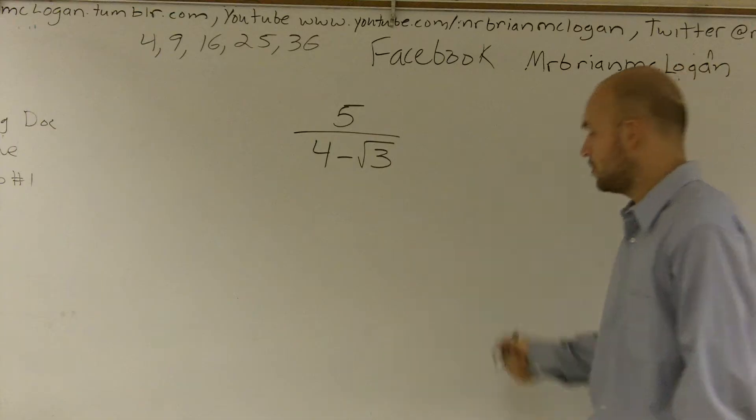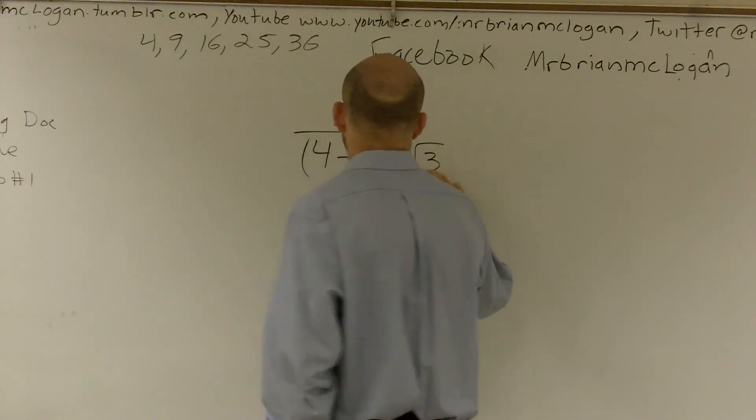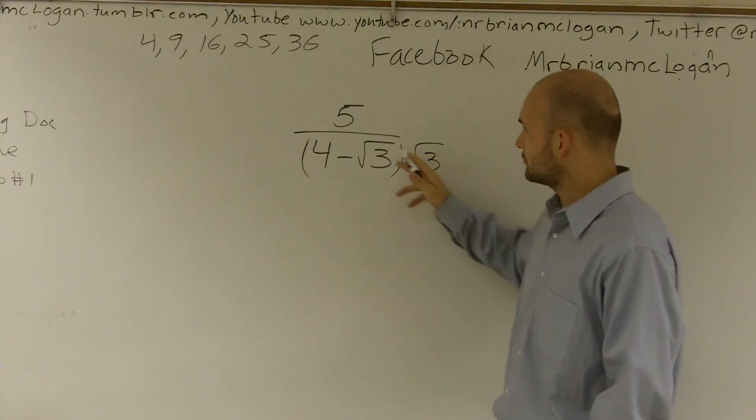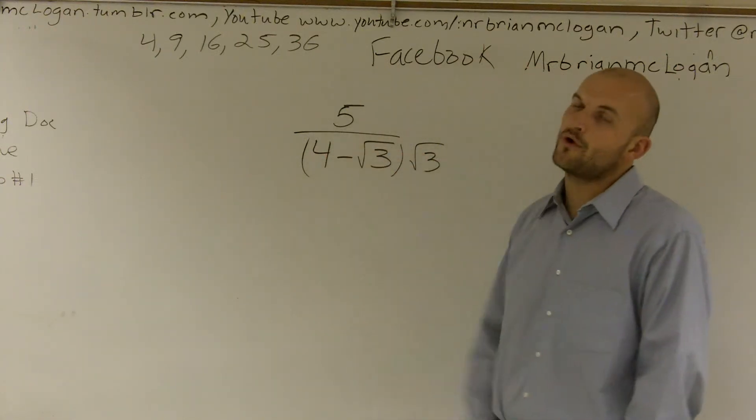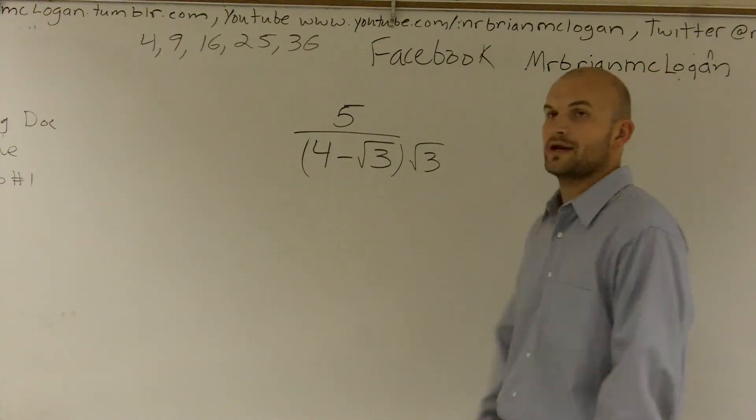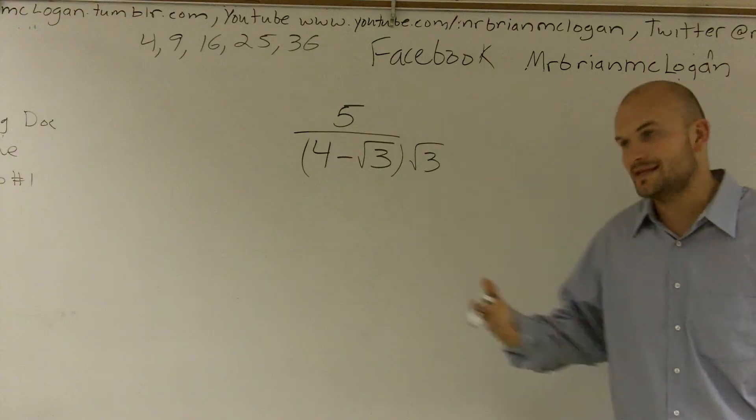but if we were to multiply by that radical, what would happen is radical 3 times radical 3 would give me 3, but then I'm multiplying radical 3 times 4, and I'm going to get 4 radical 3 again. So I'm still going to have a radical on the bottom. I have not eliminated it.